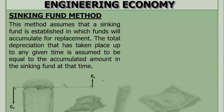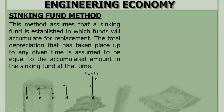So what you will do is put up a sinking fund. If you want to get the total value of the sinking fund with respect to the year, that should be equal to CO minus CL. This is similar to an ordinary annuity, wherein given F, you solve for A, the annuity.